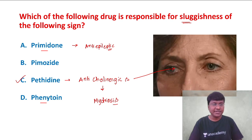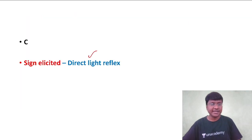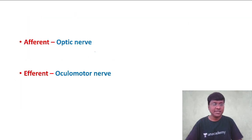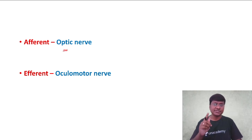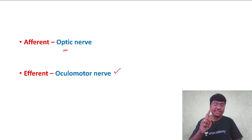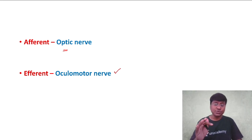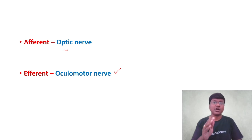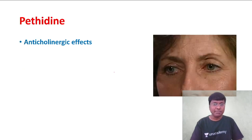This sign is your direct light reflex being elicited. The afferent for the direct light reflex is the optic nerve, and the efferent for the direct light reflex is the oculomotor nerve. Now, you should know what conditions cause mydriasis and what conditions cause miosis.